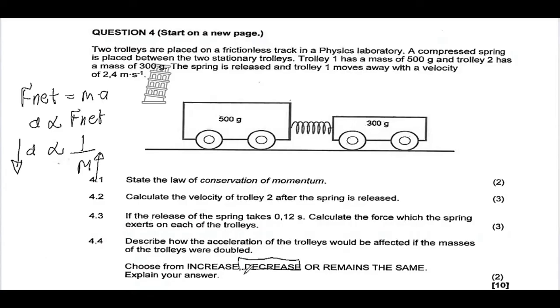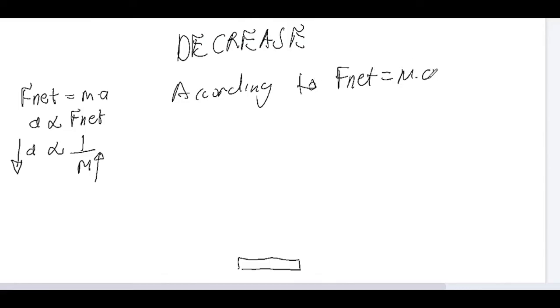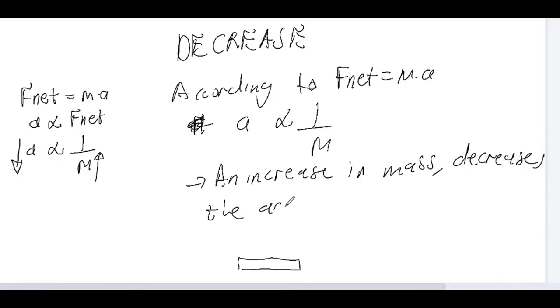So we are supposed to say decrease. Then what's the reason for that? So we have decrease. And then for our reason, we simply say, according to F net is equals to MA, which is our Newton's second law, we know that acceleration is inversely proportional to mass. So an increase in mass, an increase in mass decreases the acceleration. So that's how you go about answering that question.